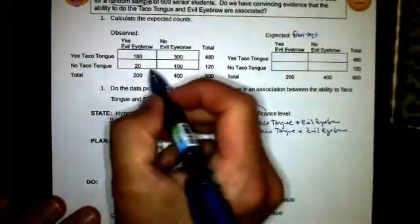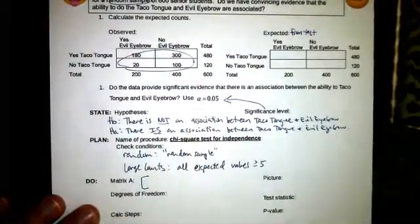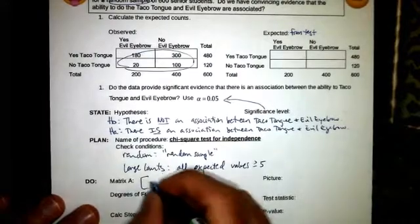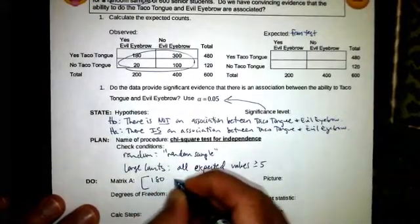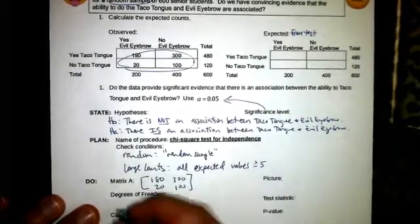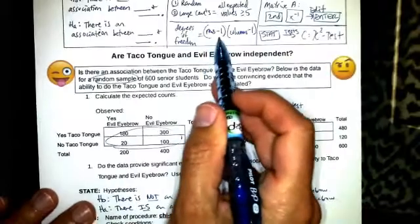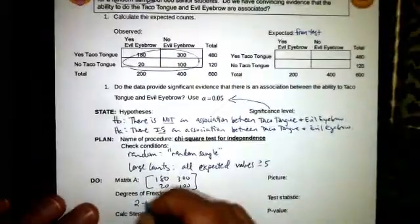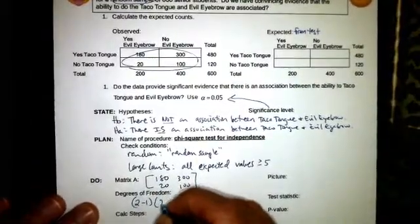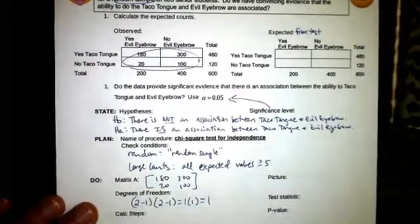Matrix A is going to be these four values in the observed table, so 180, 300, 20, 100. Degrees of freedom here, that's going to be our rows minus one, so there's two rows minus one, times two columns minus one. That's one times one, which is one.